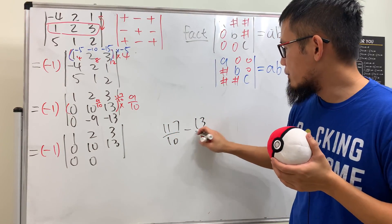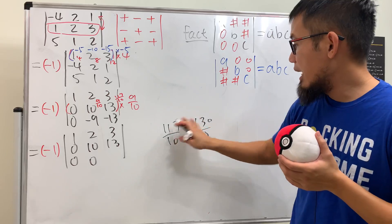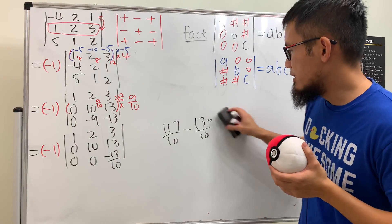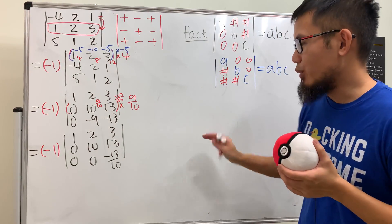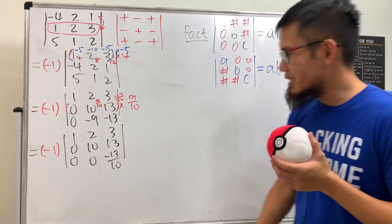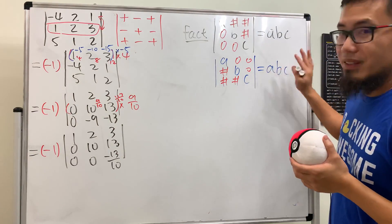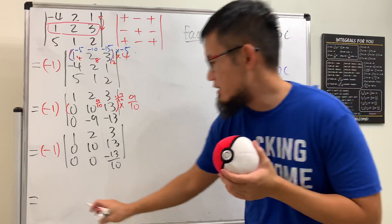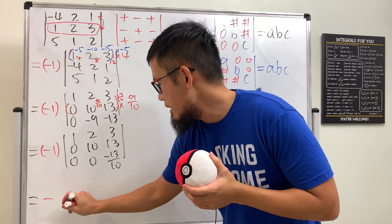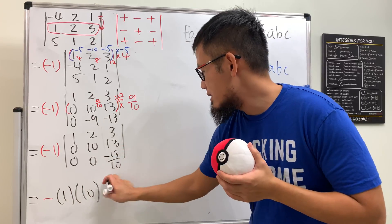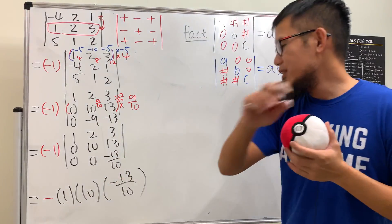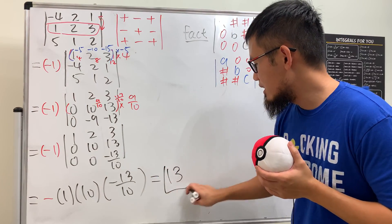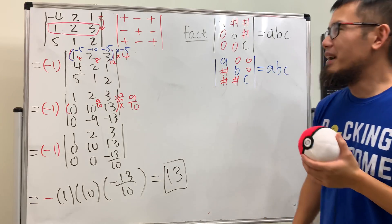This gives us an upper triangular matrix with diagonal entries one, ten, and (117/10 minus 13) = negative 13 over 10. Now the determinant is just negative one times one times ten times negative thirteen over ten, and that gives us positive 13. The row operations to reach triangular form preserve or track the determinant, and in the end we get the same answer.